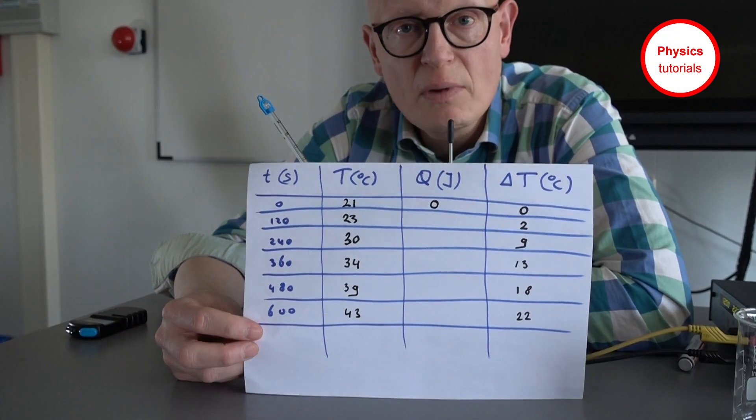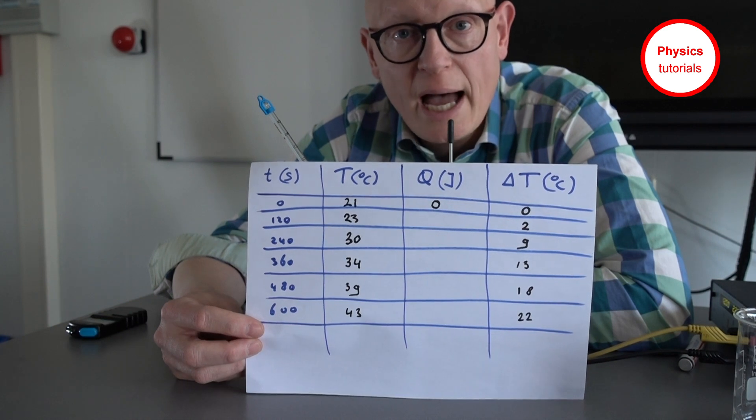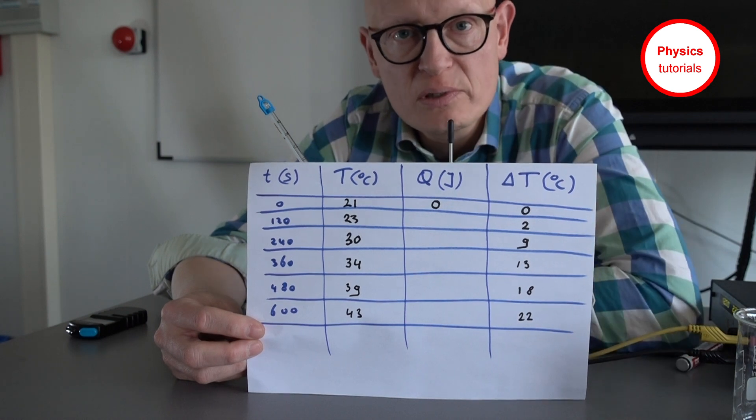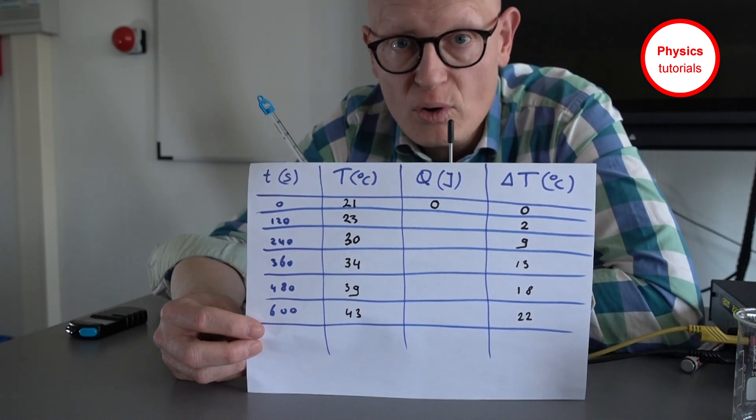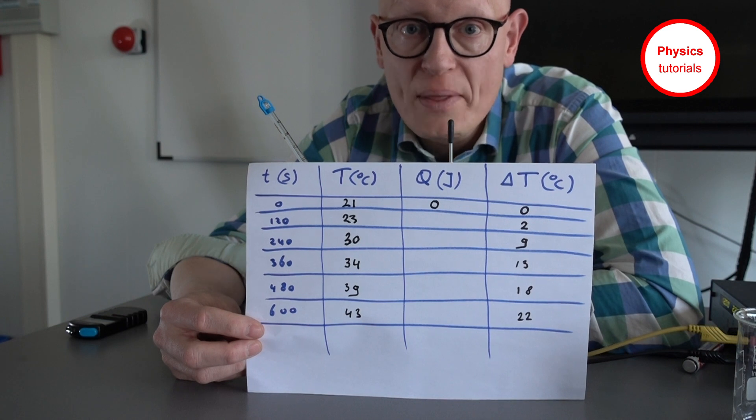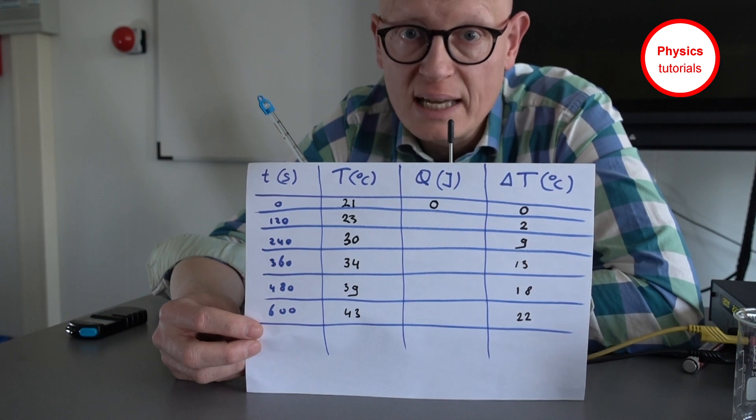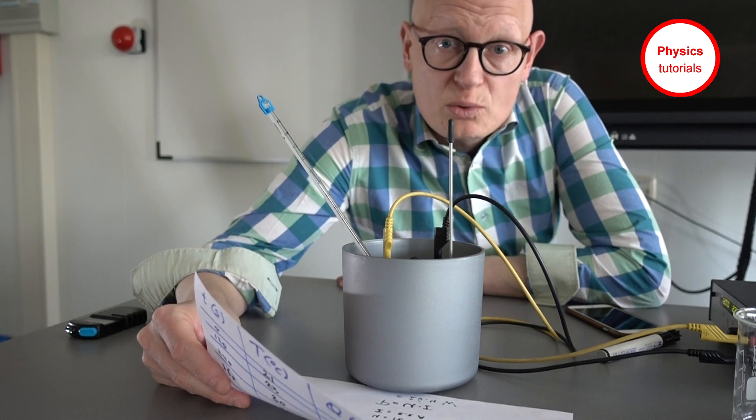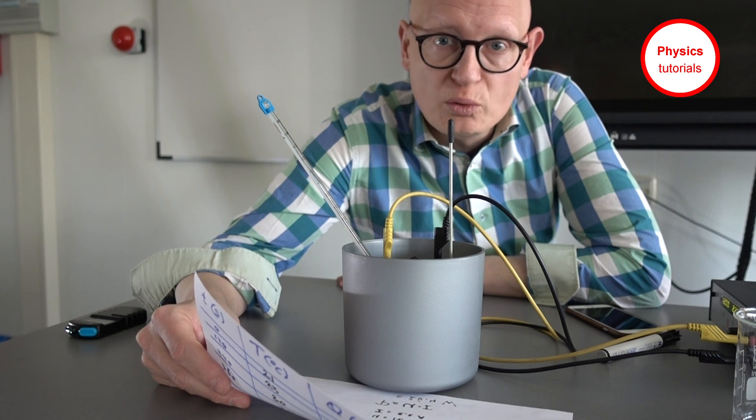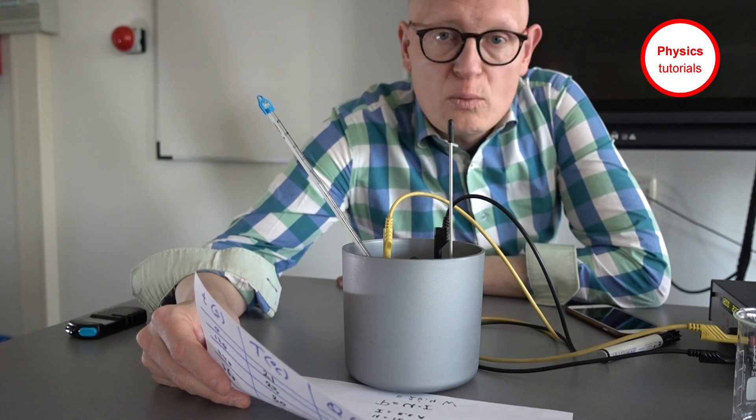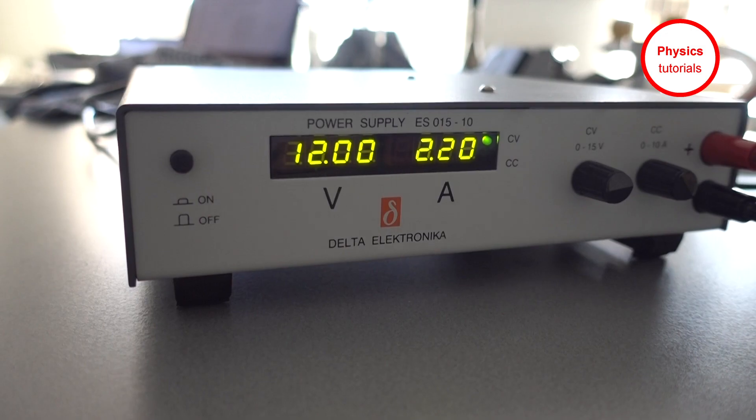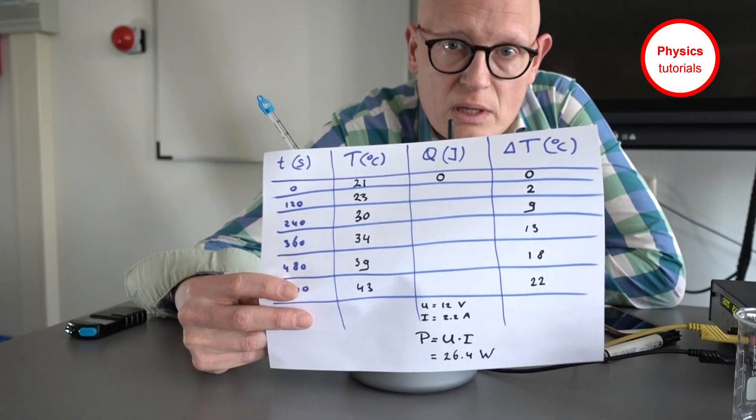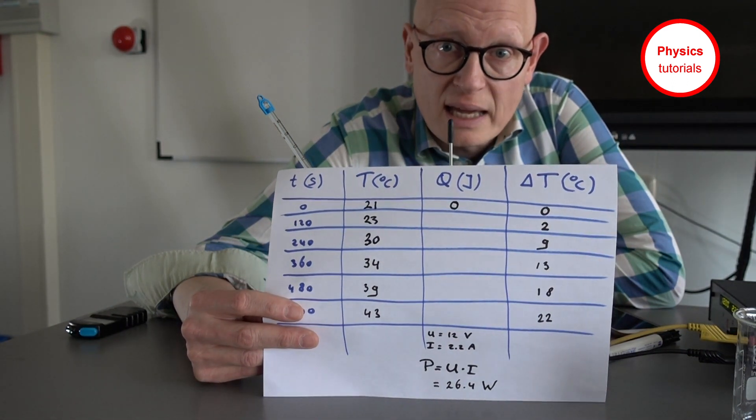So I finished my table. The only thing I need to do now is calculate how much heat energy has been transferred into the water. For that I need to know what the power is of my heating element. On the power supply you could see that the heating element was connected to a PD of 12 volts and that there was a current flowing through the heating element of 2.2 amps. With those two numbers you can calculate the power of the heating element.